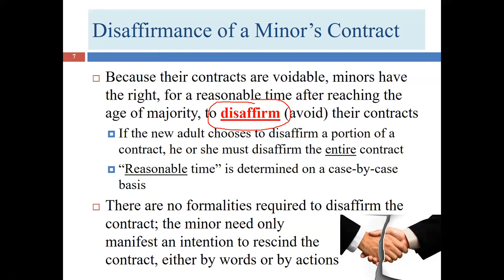A reasonable time after turning 18 doesn't mean calling at 12:02 a.m. on your birthday, but probably within a few days — sooner rather than later. When disaffirming, the minor must disaffirm the entire contract — it's all or nothing. You can't pick the parts you liked. For example, a minor can't keep a loaf of bread from Kroger while refusing to pay — that wouldn't be fair to Kroger.